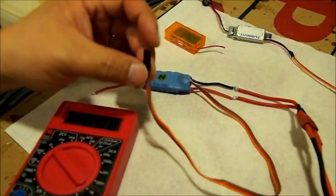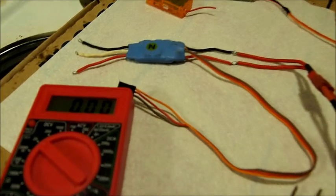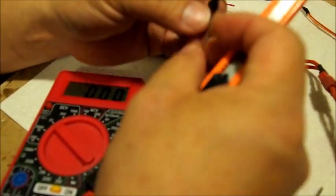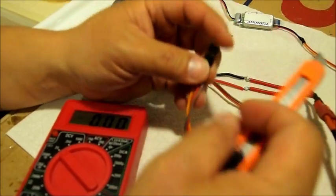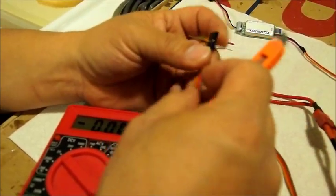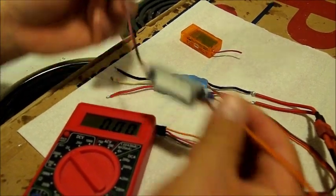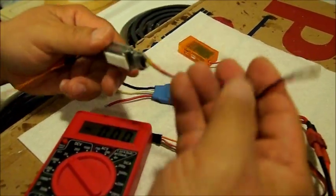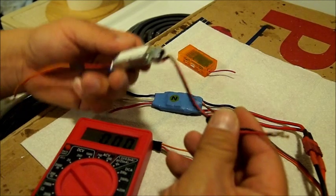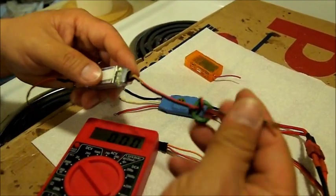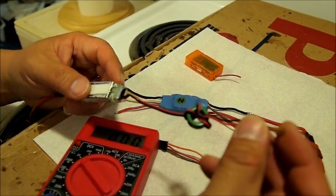So what I want to do from there, instead of cutting out, you'll notice on your UBEC the input on this side is a positive and negative. On the output you also have a positive and negative.